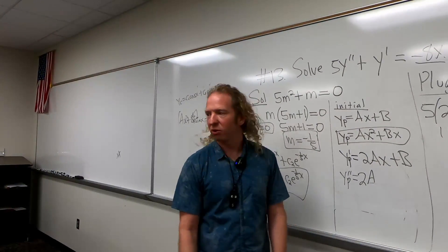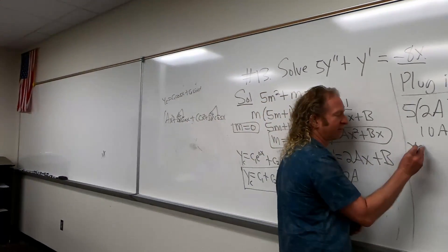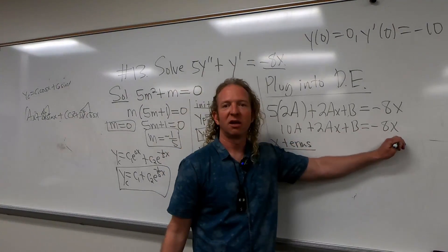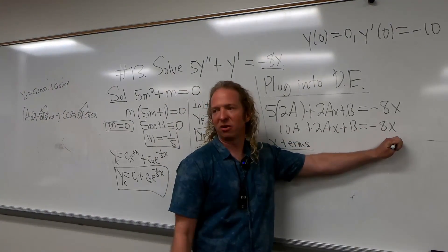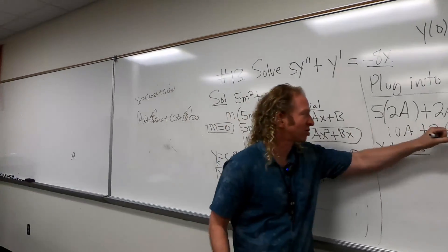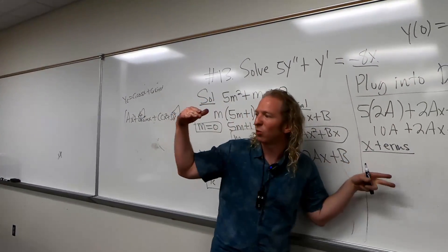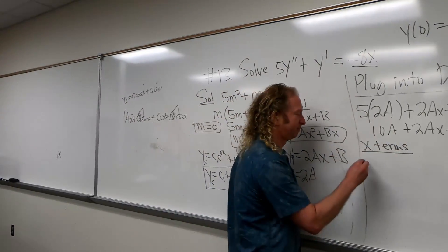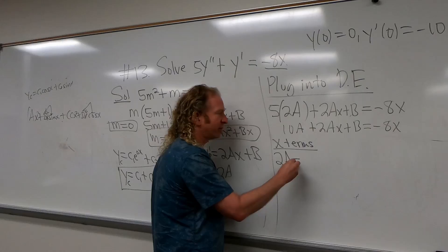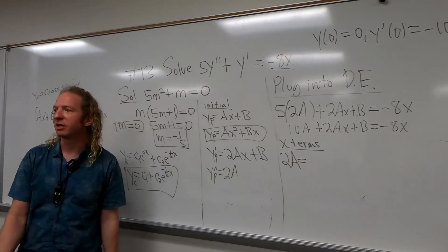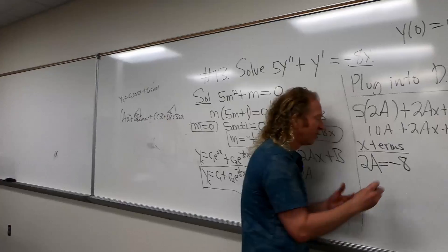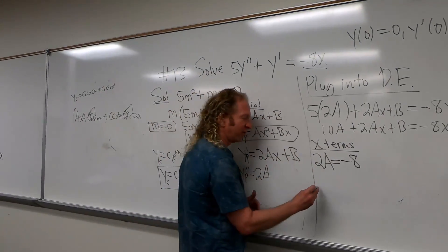Now we can just equate coefficients. Look at the x terms — that's because x appears on the right-hand side, and it's the highest power. So 2A equals negative 8, and then you divide by 2, so A is negative 4.